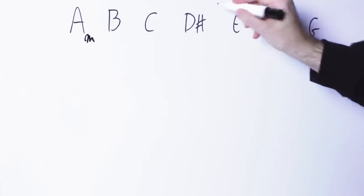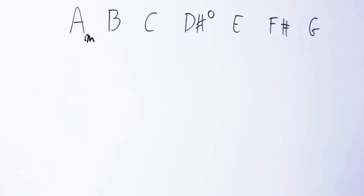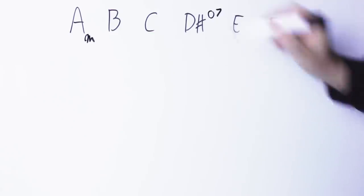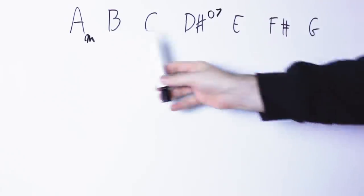On the D sharp note I can build a D sharp diminished triad, D sharp, F sharp, A, and in fact I can build a full diminished seventh chord, D sharp, F sharp, A, C.